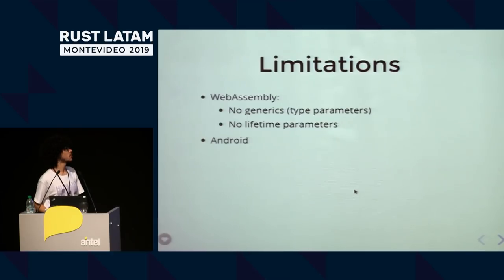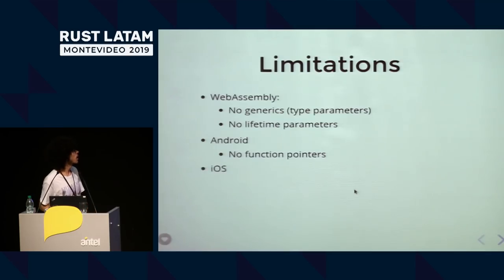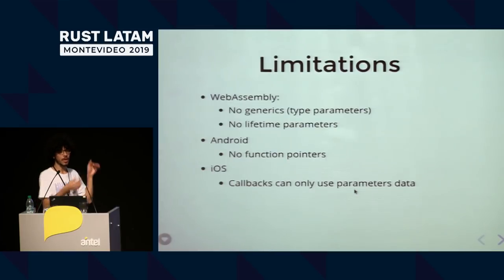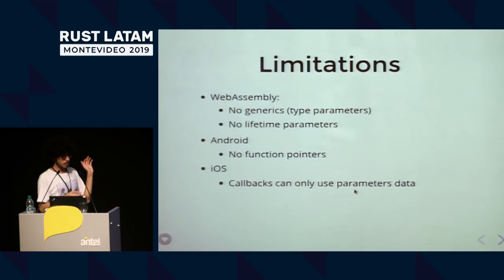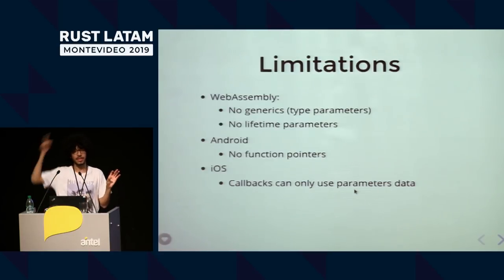For Android, one thing about Java is there are no function pointers. A way to call a callback is either receive an object and call a specific method on it, or in the Kotlin/Java interface, receive a closure, store it, and have a method that calls it — which you call from Rust. For iOS, you can do callbacks, but every time you pass a callback to C — because on iOS it treats everything as C interop — you can't use data from an object. If you're in a class, you can't use anything related to self or this. You can only reference things that are received in the closure or are static data.